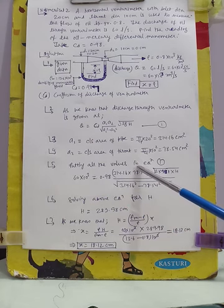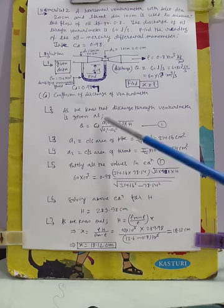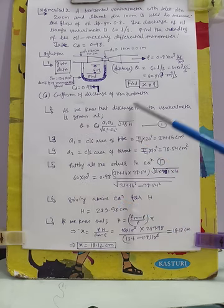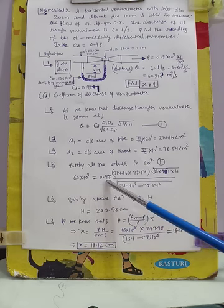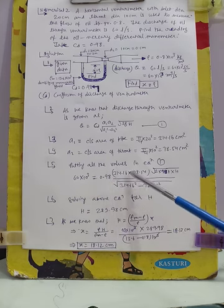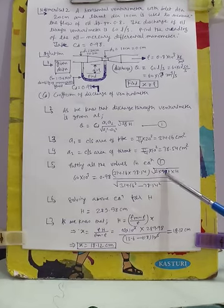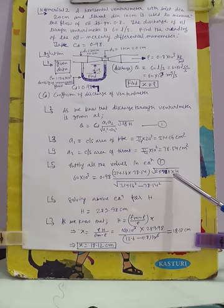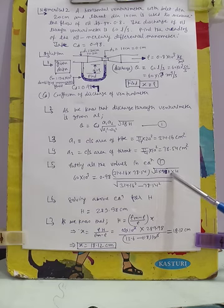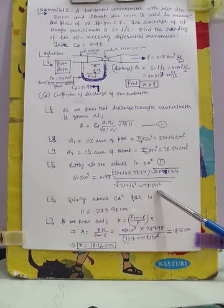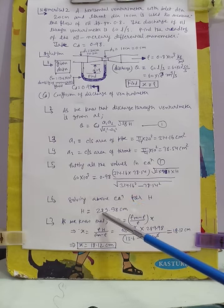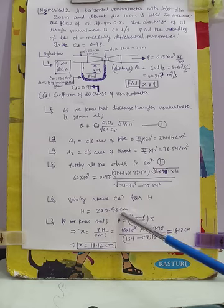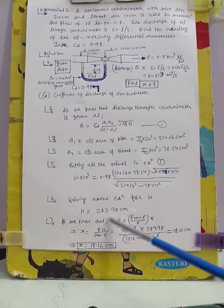Now let us put all the values into the discharge equation. Q = 60,000 cm³/s = 0.98 × 314.16 × 78.54 × √(2 × 981 × h) / √(314.16² − 78.54²). Here g = 981 cm/s². By solving this equation for h, we get h = 289.98 centimeter.